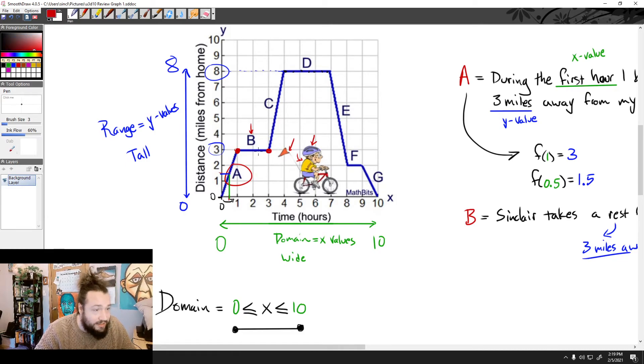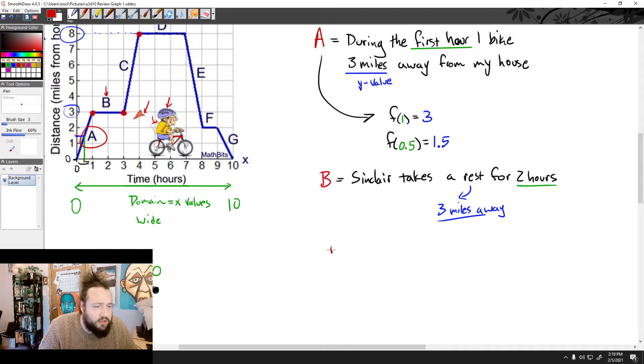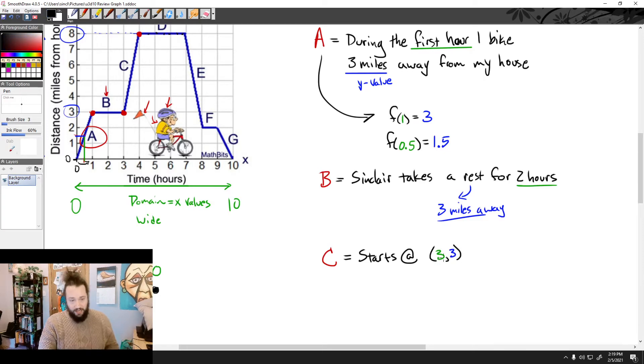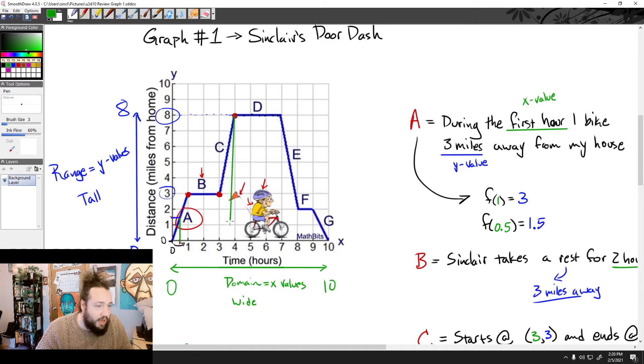Now, let's talk section C. Section C is a pretty steep jump. It jumps from this 3, 3 all the way up to 4, 8. Okay? So we could say something like this. We could say section C starts at. And then I'll use my color coding. I'll say input 3 and output 3. That's where I started. That's the end. Hour 3, I end my nap. I end my break. And ends at.